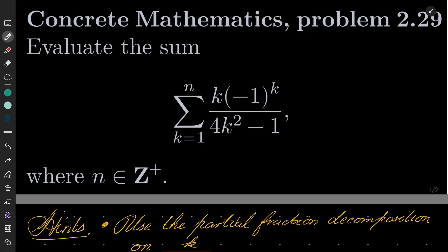Hello friends. In this video I'd like to solve the following problem from the Concrete Mathematics textbook: Problem 29 from the second chapter. We wish to evaluate the sum from k equals 1 to n of k times (-1)^k over 4k squared minus 1, where n is a positive integer.